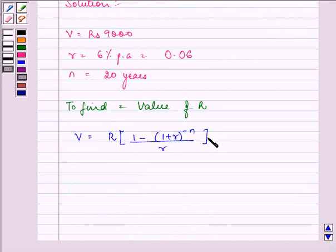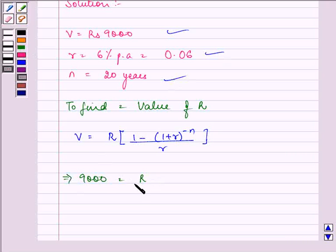Now we will be substituting these three values that are known to us. It is 9000 equal to R upon R that is 0.06. This is the rate of interest. 1 minus 1 plus R that will be 1.06 raised to the power minus 20.